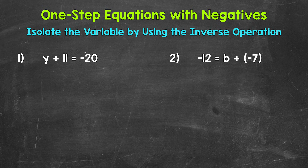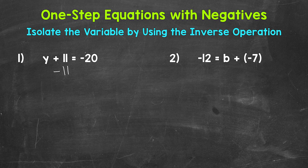Let's jump into number one, where we have y plus 11 equals negative 20. We need to isolate that variable of y and figure out what y equals. Since 11 is being added to y, we need to undo that addition by using the inverse operation — the opposite operation. The opposite of addition is subtraction, so let's subtract 11 from the left side of the equation. Whatever we do to one side of the equation, we must do to the other in order to keep it balanced and equal.